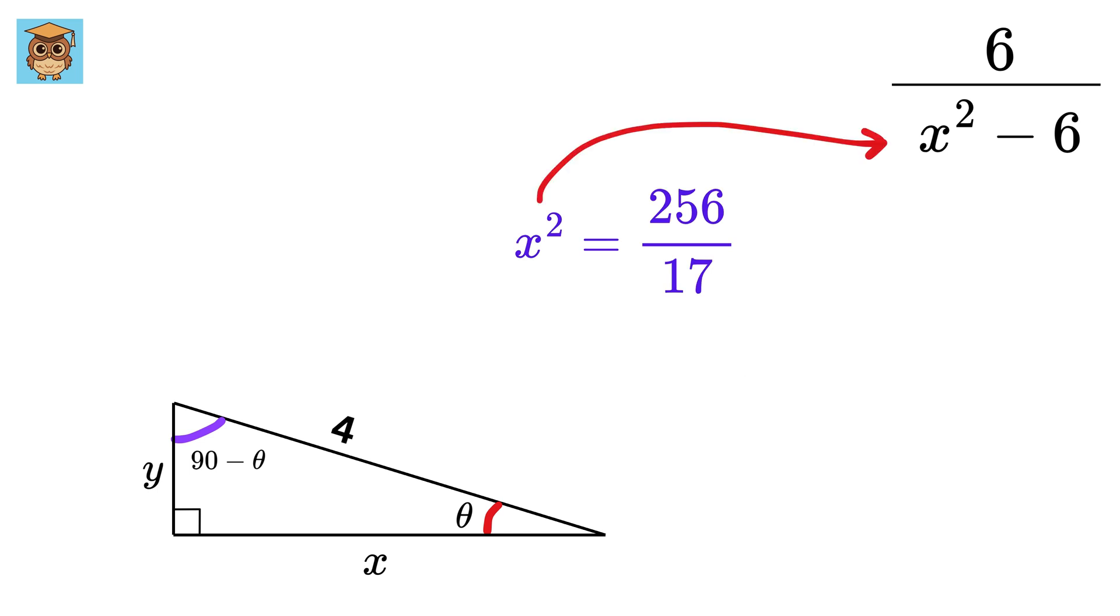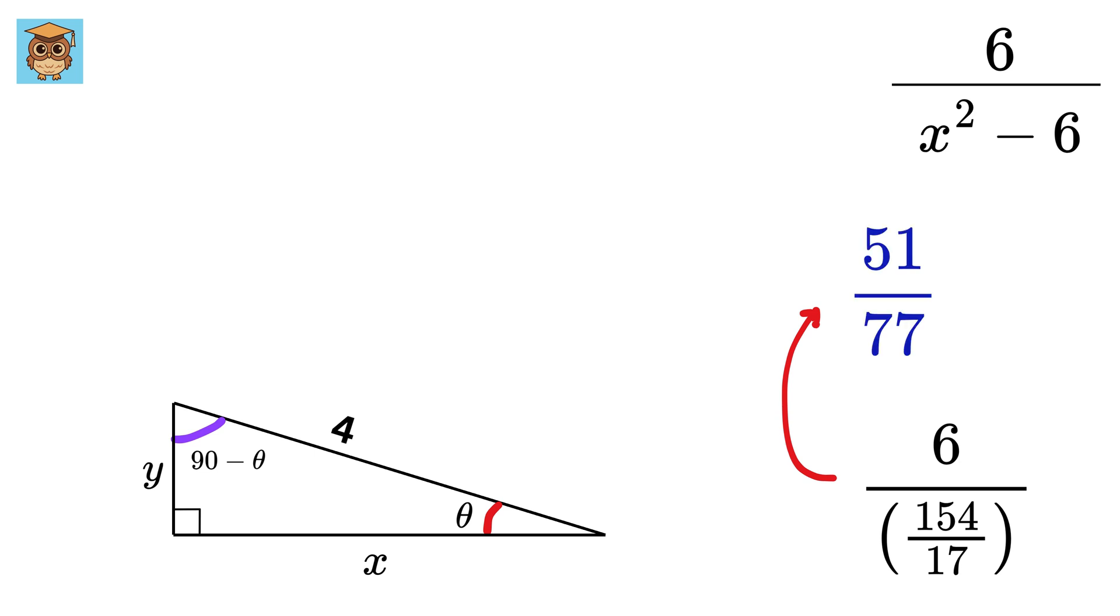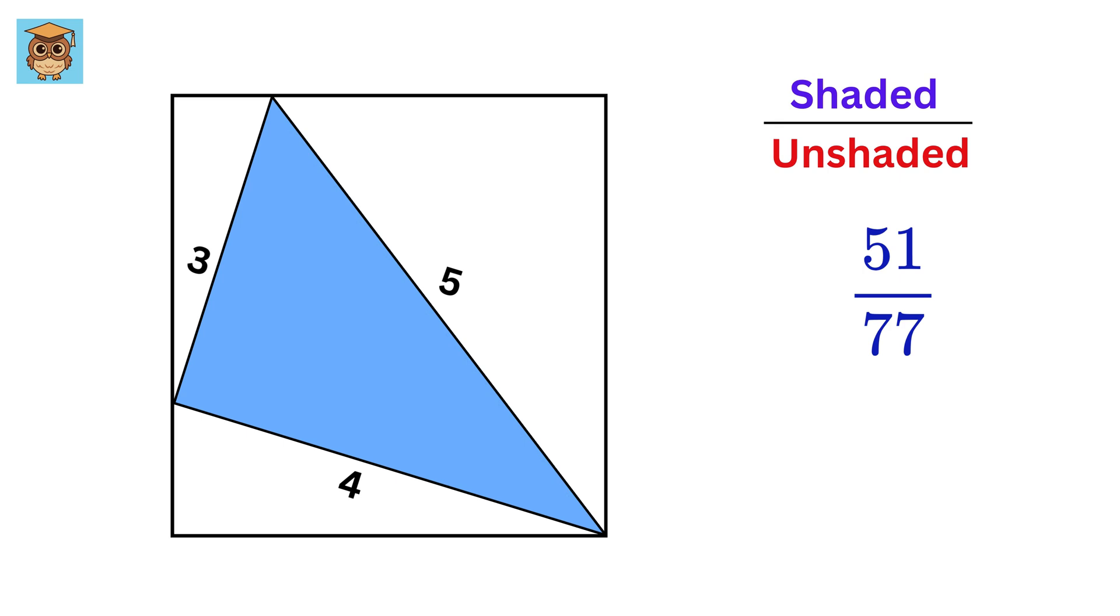Nice! Now substitute it here to make this denominator as 256 over 17 minus 6, or 154 over 17, and then 6 divided by this, finally gives us the required ratio as 51 over 77. Were you able to solve it?